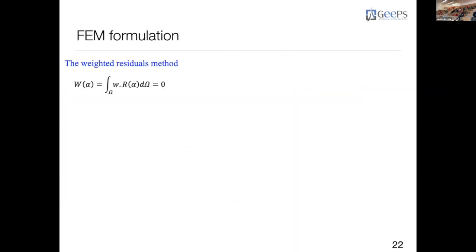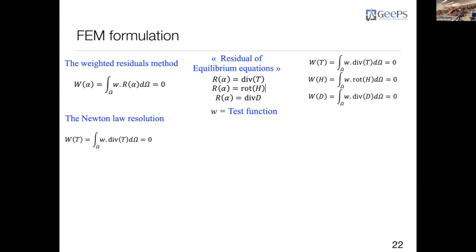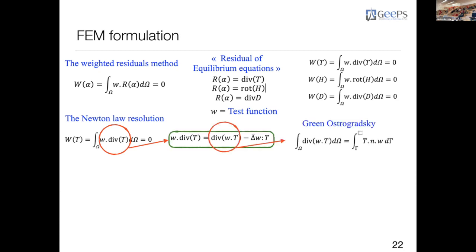We explain the FEM formulation starting with the weighted residual method. We consider the residual of the equilibrium equation and introduce a test function. For each case we introduce the formulation — here the example for Newton's law resolution. Starting from the expression, we apply the divergence theorem and simplify using the Green-Ostrogradsky relation. Using the Neumann condition for the elastic domain, we eliminate certain terms, giving the simplified form of the problem.